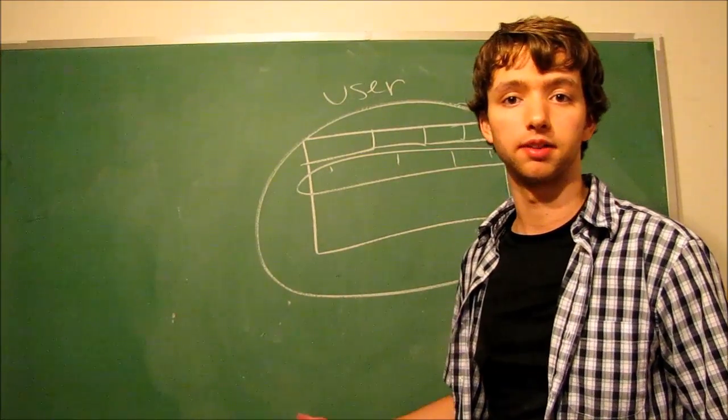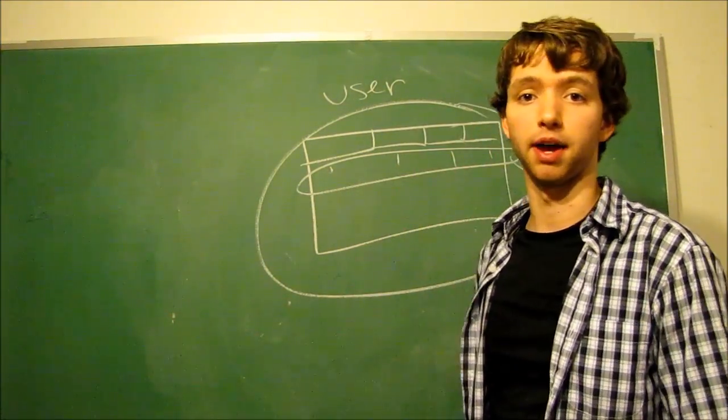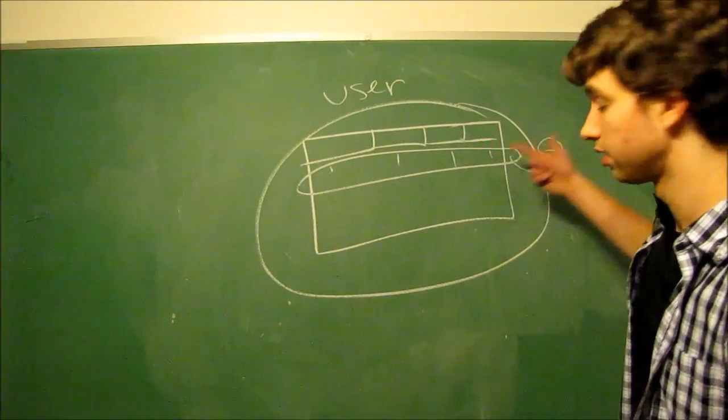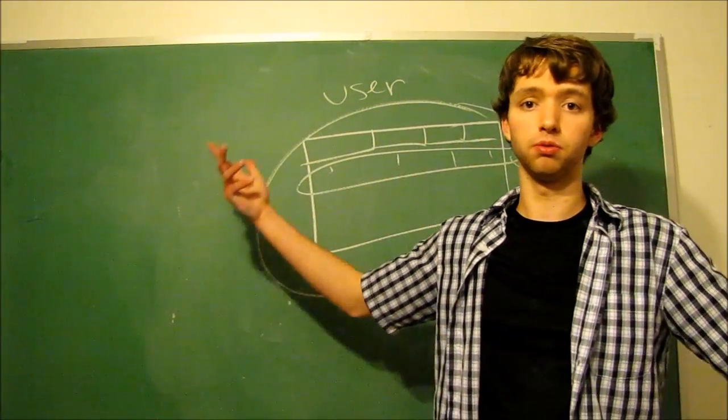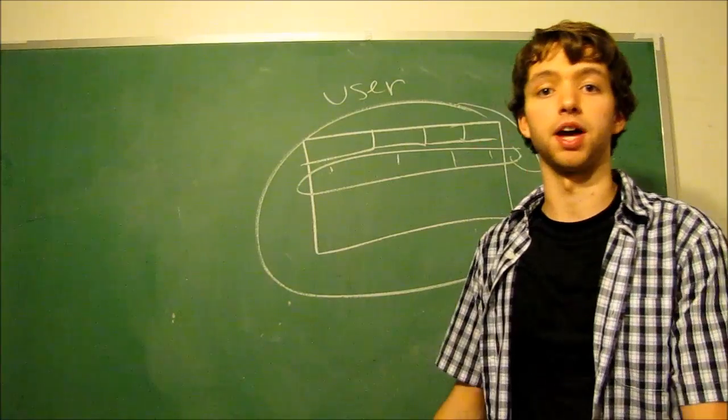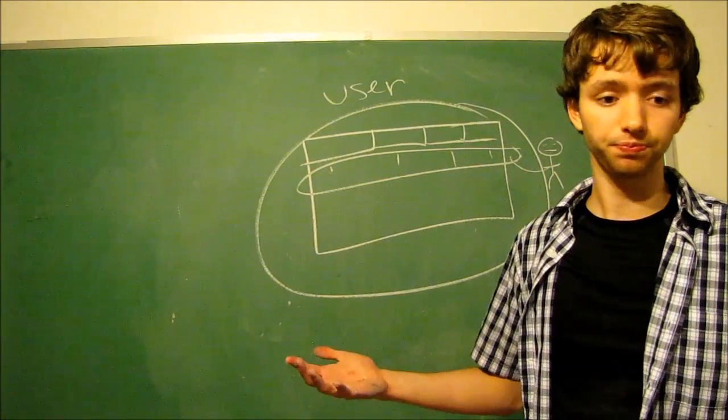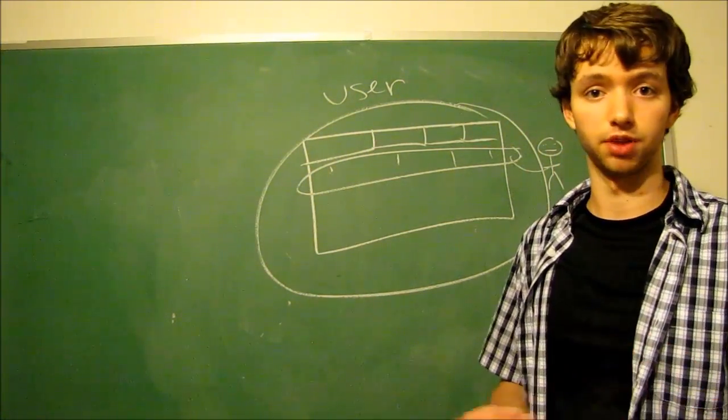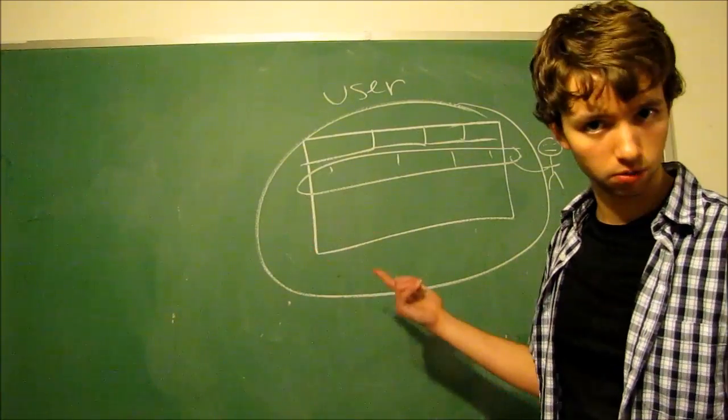Oh, another thing I would like to mention real quick. Another name in mathematics for a row is a tuple or a tuple. I think it's tuple. I don't really know. But that is another term you will hear. So, yeah. Tuple is a row.